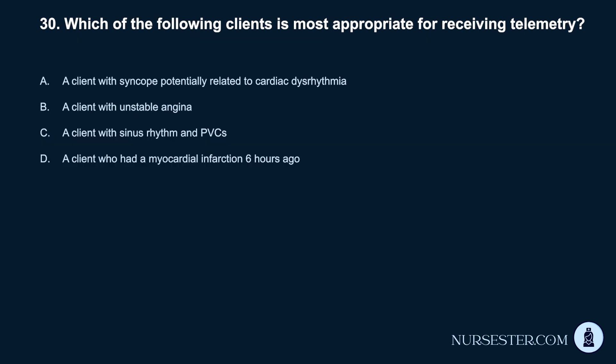Question 30. Which of the following clients is most appropriate for receiving telemetry? A. A client with syncope potentially related to cardiac dysrhythmia. B. A client with unstable angina. C. A client with sinus rhythm and PVCs. D. A client who had a myocardial infarction 6 hours ago.